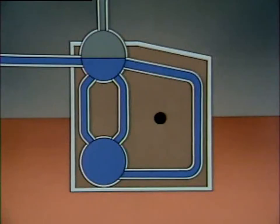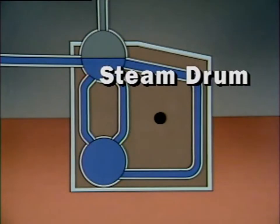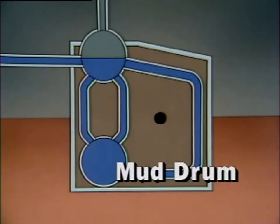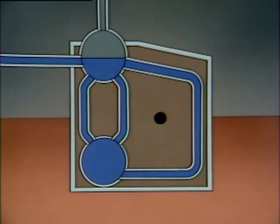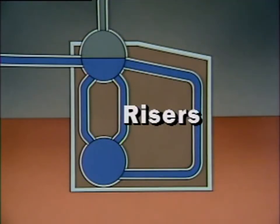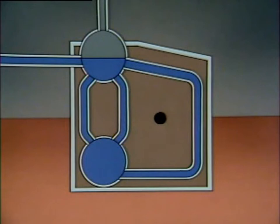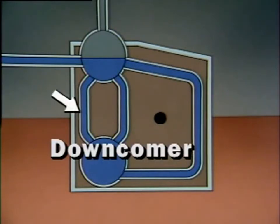For a boiler to produce steam, water has to flow through the boiler properly. One way to provide water flow in a boiler is by a process called natural circulation. This simplified water tube boiler illustrates how it works. The boiler has two drums: the upper drum, sometimes called a steam drum, and the lower drum, often called a mud drum. There's also a series of water tubes called risers, which carry a steam-water mixture to the steam drum, and a downcomer, which carries water from the steam drum to the mud drum.